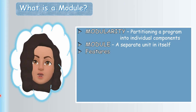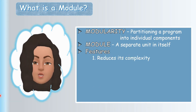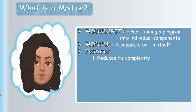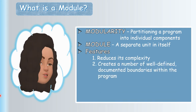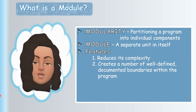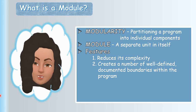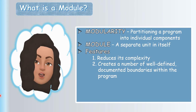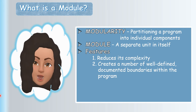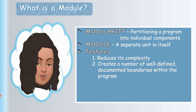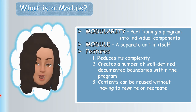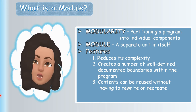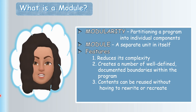Modules reduce complexity because we are dividing a bigger program into smaller individual units. Modules also create well-defined, documented boundaries within the program. Every module is independent and can run on its own. The contents can be reused — once a module is written, you can use it anywhere, any number of times, without having to rewrite the code.